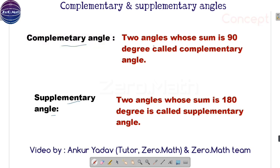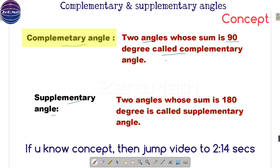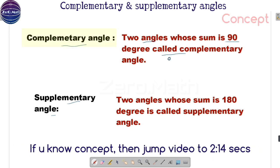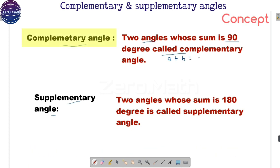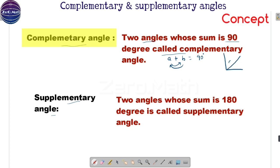Let us first begin with what is a complementary angle. Two angles whose sum is 90 degrees are called complementary angles. Let us say there are two angles A and B, and the sum of these two angles A plus B is 90 degrees. Then angle A is the complementary angle of B, and B is the complementary angle of A. You can see in this figure: this is angle A, there is angle B, and both form a 90 degree angle — they are complementary angles.